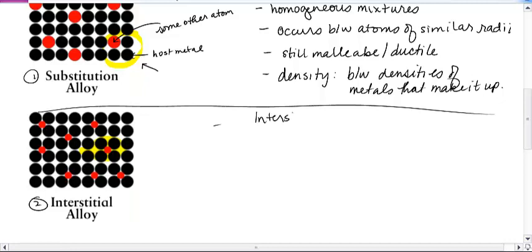for interstitial alloy, is going to occur when one atom has a much smaller radius than the other.